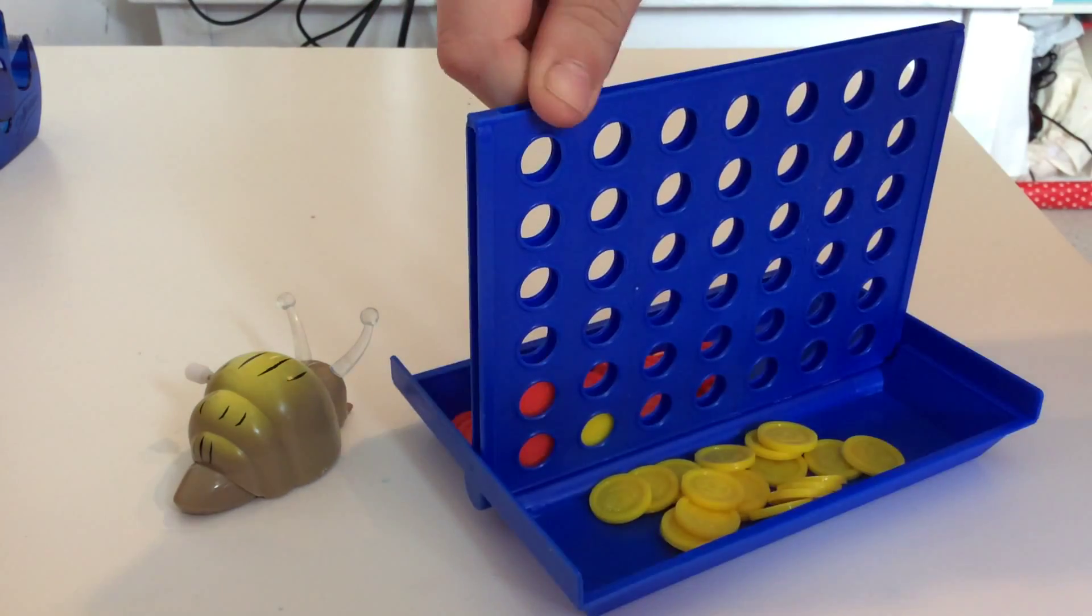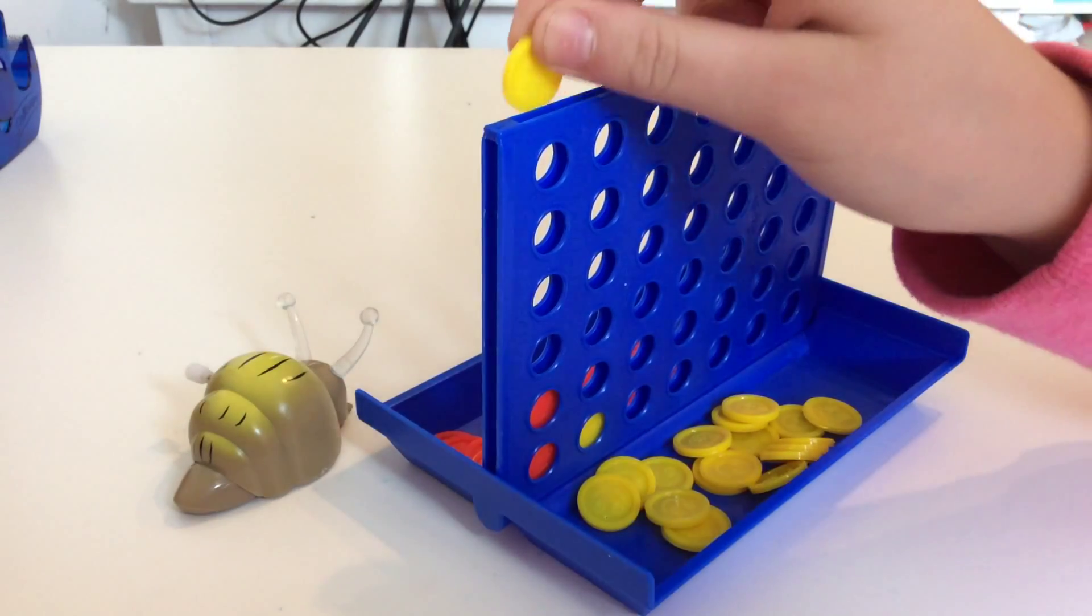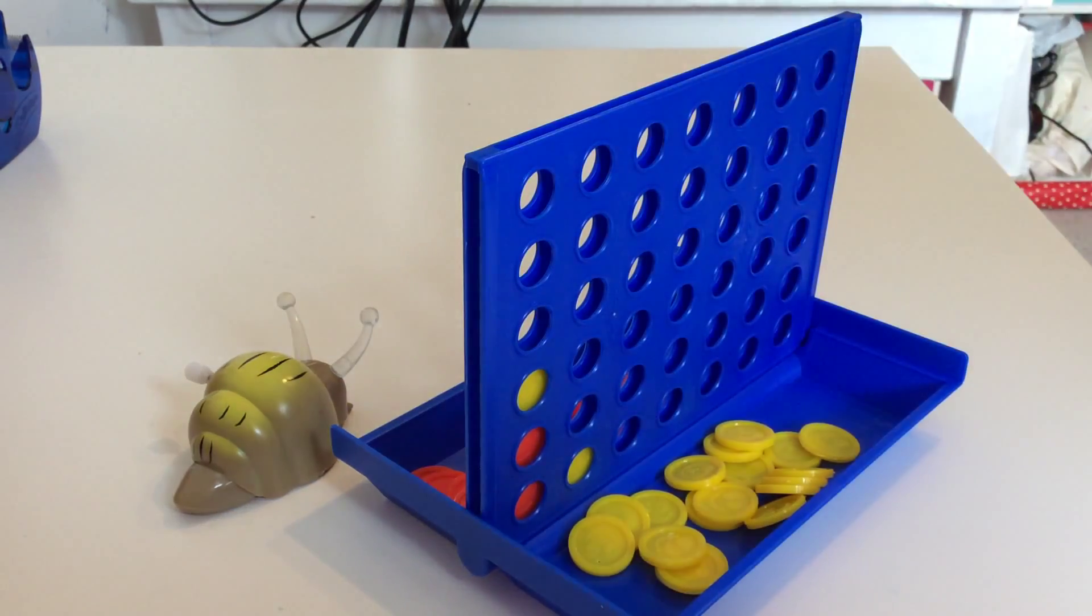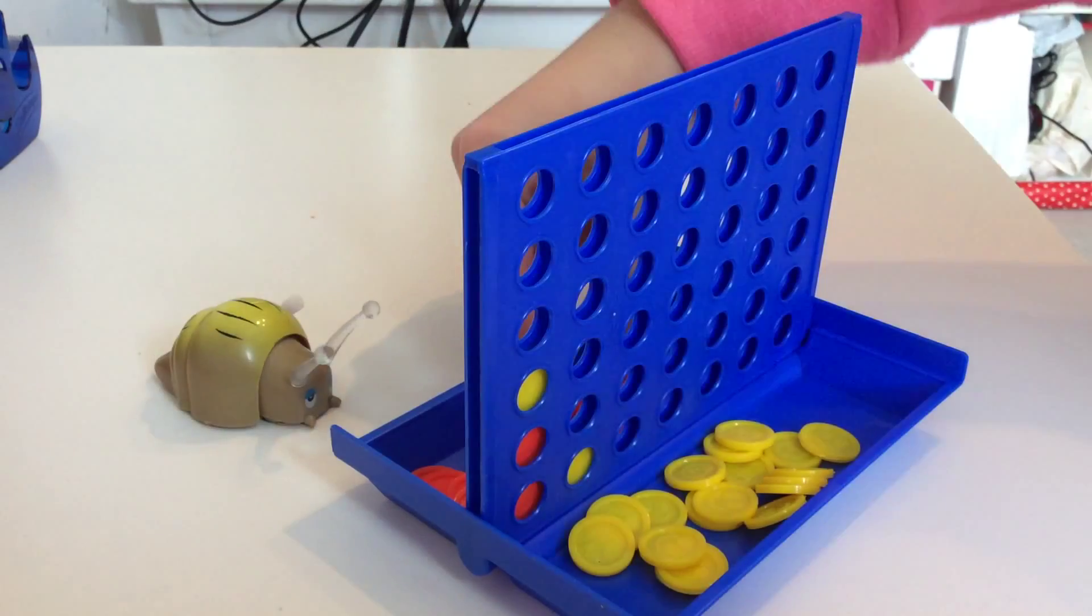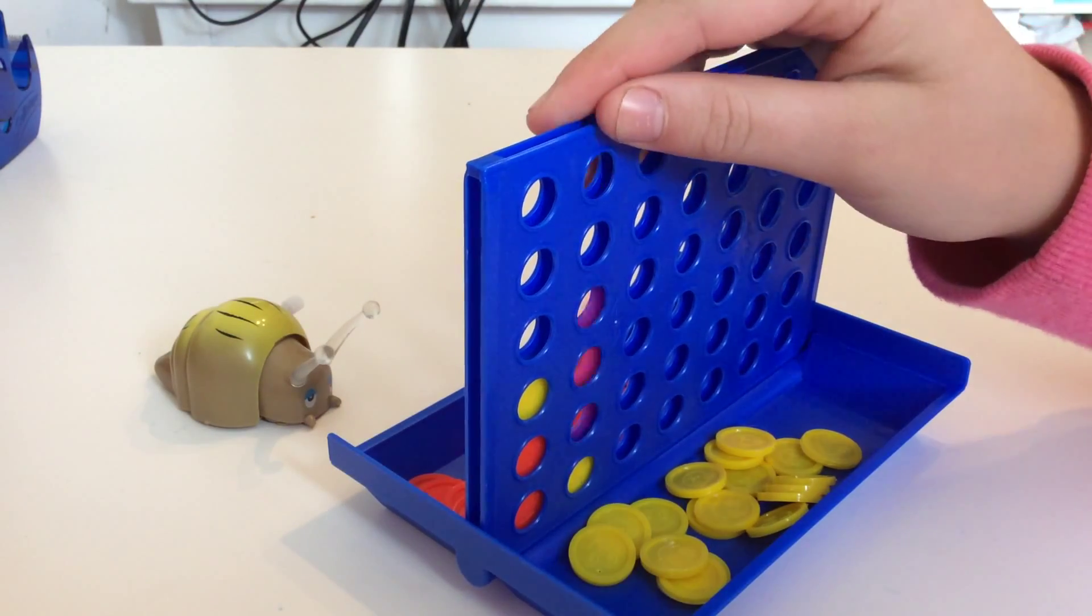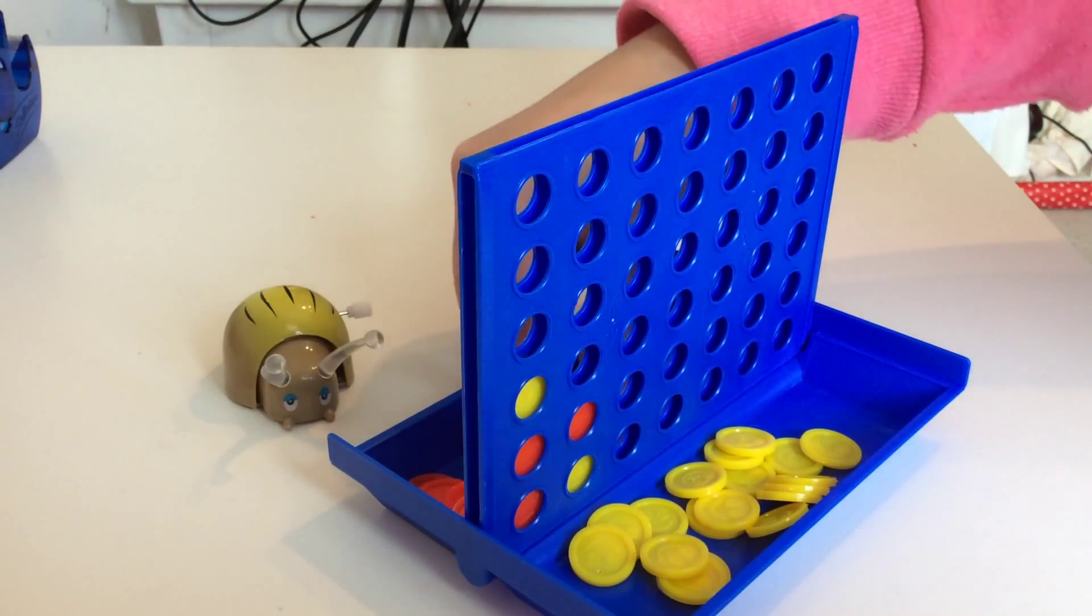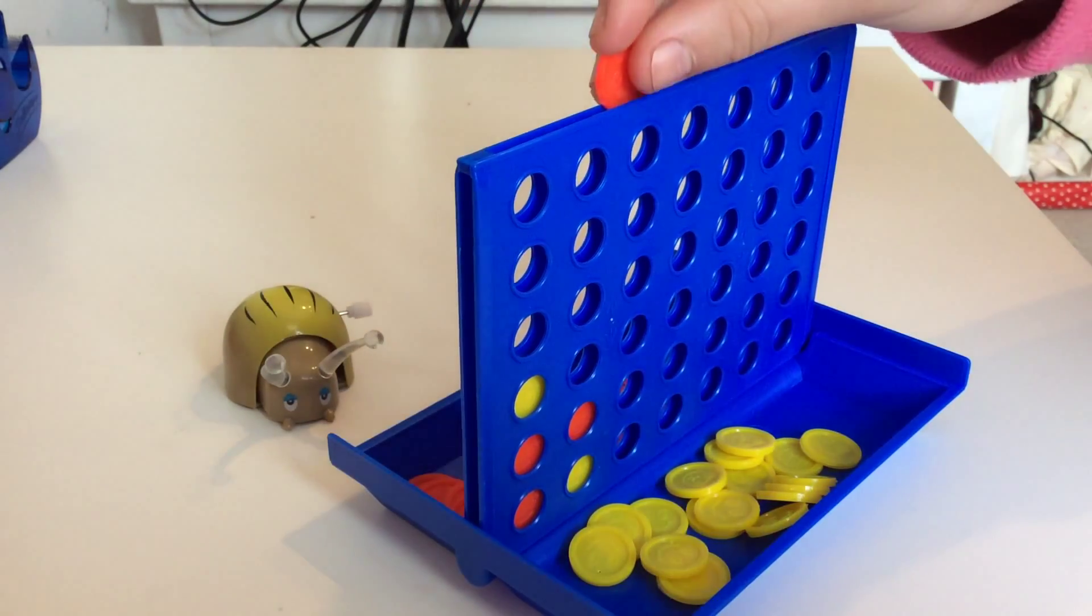Now Snail is going to try and put his counter here again. And I'm going to put mine here, so it blocks Snail. Oh no, now Snail will choose to put his counter here, so it blocks me.